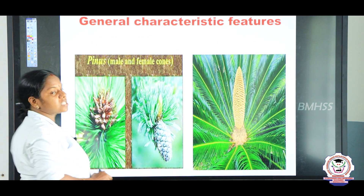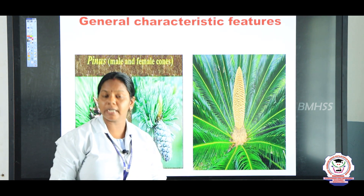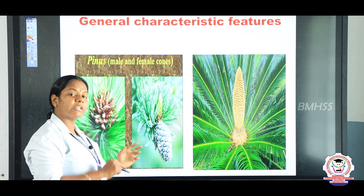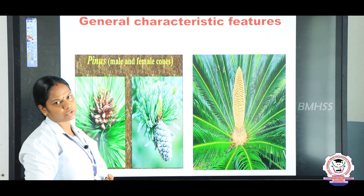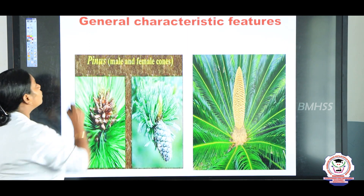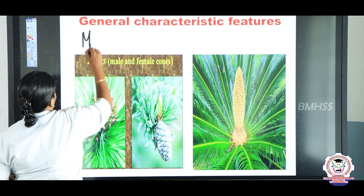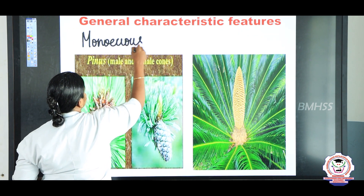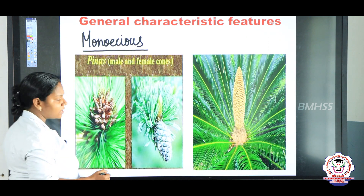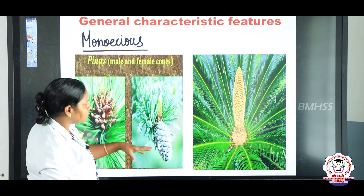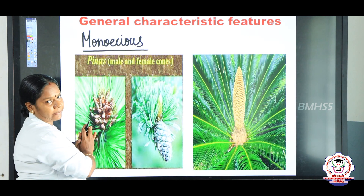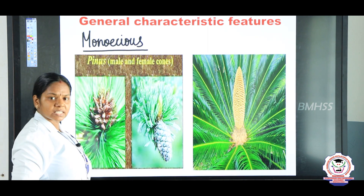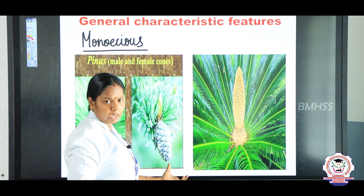Now we are going to study about spores — that is, reproduction. Gymnosperms are said to be heterosporous, meaning different types of spores are produced. One condition is monoecious — meaning single house — where both male and female cones are present on a single plant. Some gymnosperms are monoecious.